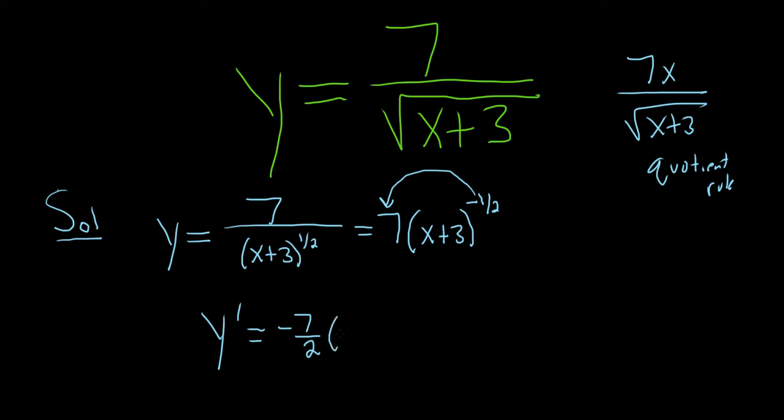Then we leave the inside untouched, so x plus 3. And then now we subtract. So negative 1 half minus 1 is negative 3 halves. So negative 3 halves.